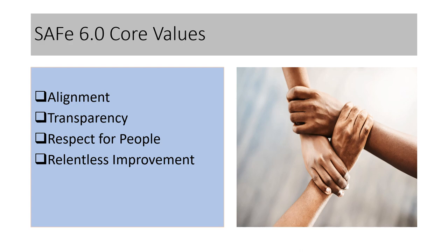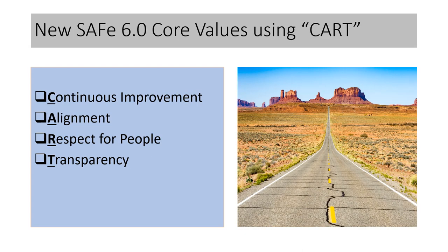The other new core value introduced is relentless improvement — continuous improvement in all our practices, be it the processes we are using, the tools, the technology. Identifying areas where we need to improve as a team, as a program, as a group, and continuously reflecting on those opportunities. When we talk about Scrum teams, they do the retrospective at the end of the sprint. Similarly, during PI how we are doing — there is a concept of optimizing the whole. That's why they have introduced this new core value of relentless improvement.